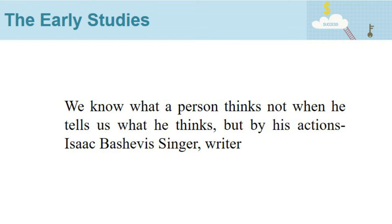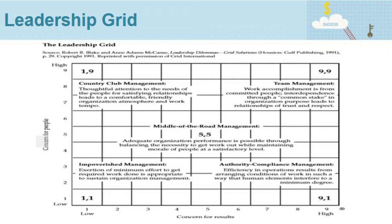To conduct the questionnaire, we can use the leadership grid. The leadership grid provides leader behaviors on two dimensions: concern for people, and concern for production. The word 'concern' reflects how a leader's underlying assumptions about people at work and the importance of the bottom line affect leadership style. We can see the illustrations on the screen about the leadership grid, which gives a simple illustration about leadership behavior tendency.